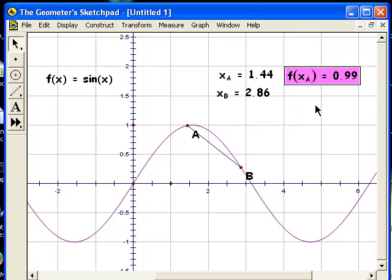And then, I end up with the value of the function at that value. What you need to do is you need to calculate the average rate of change between points A and B on Geometer's Sketchpad.